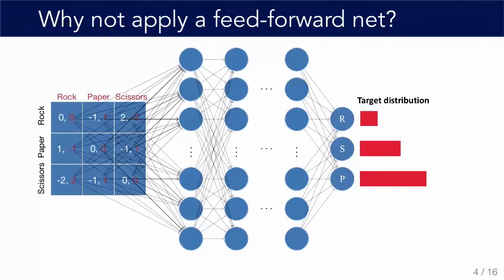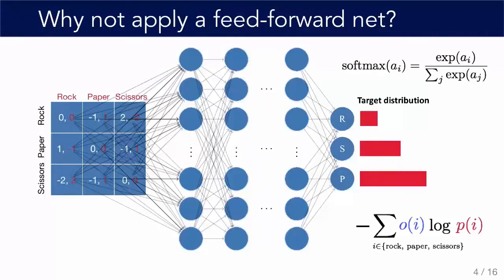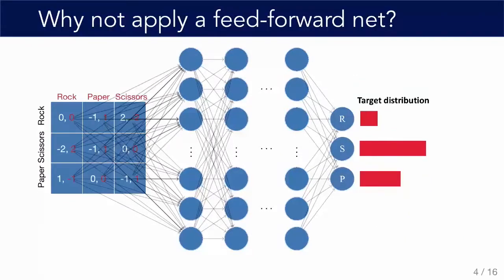We're sitting in the deep learning session, so let's try applying a feedforward net. We can flatten the payoff matrix into one long vector, run it through a number of hidden layers, put a softmax on the output since we're mapping to a distribution, and train to maximize the likelihood of the training data — equivalently minimize the negative log likelihood. This is all kind of bread and butter. But what happens if I see a game like this in our test set, where the payoff matrix looks different from our training set?